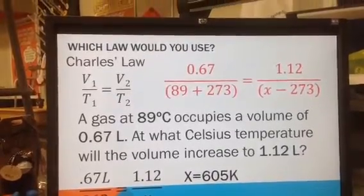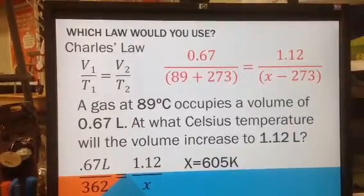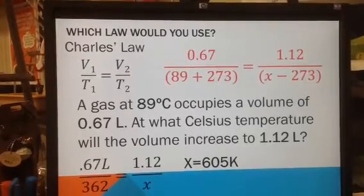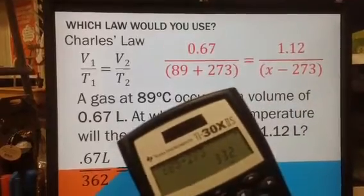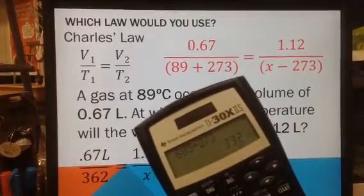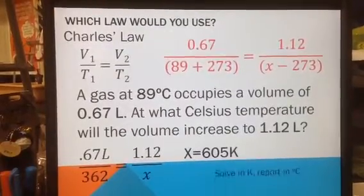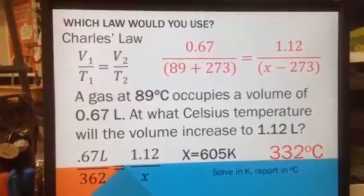605 is in Kelvin. To transfer that from Kelvin to Celsius, I take away 273. So if you have C, add 273, but if you have K, you take it away. So my new number would be 332 degrees Celsius.